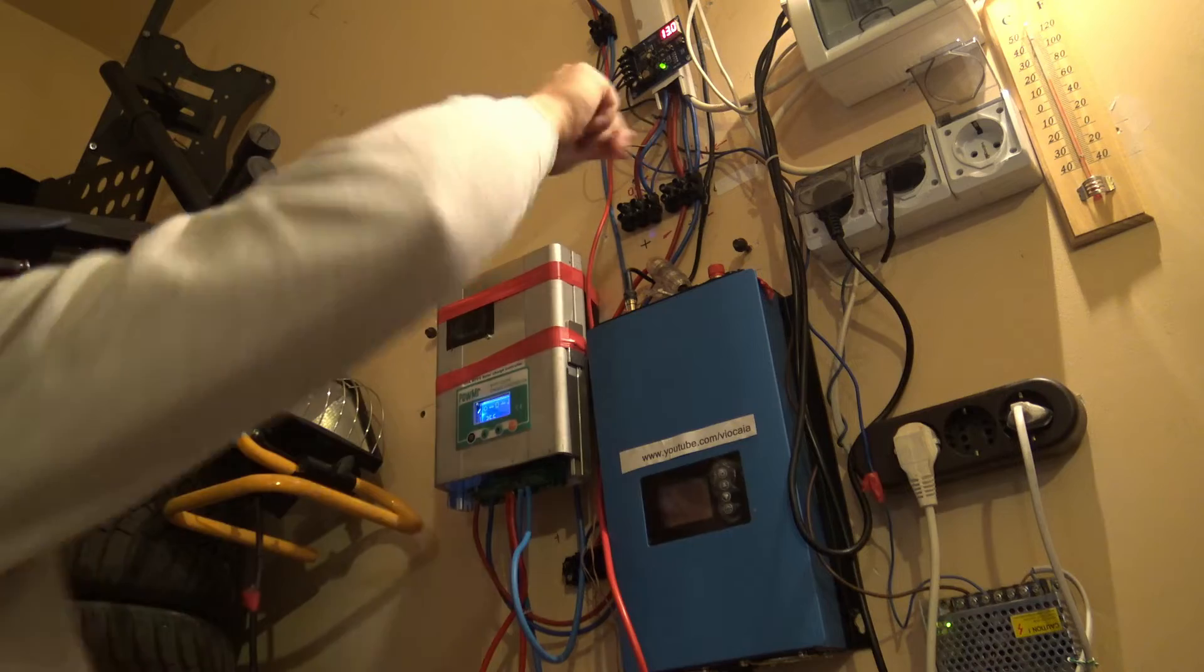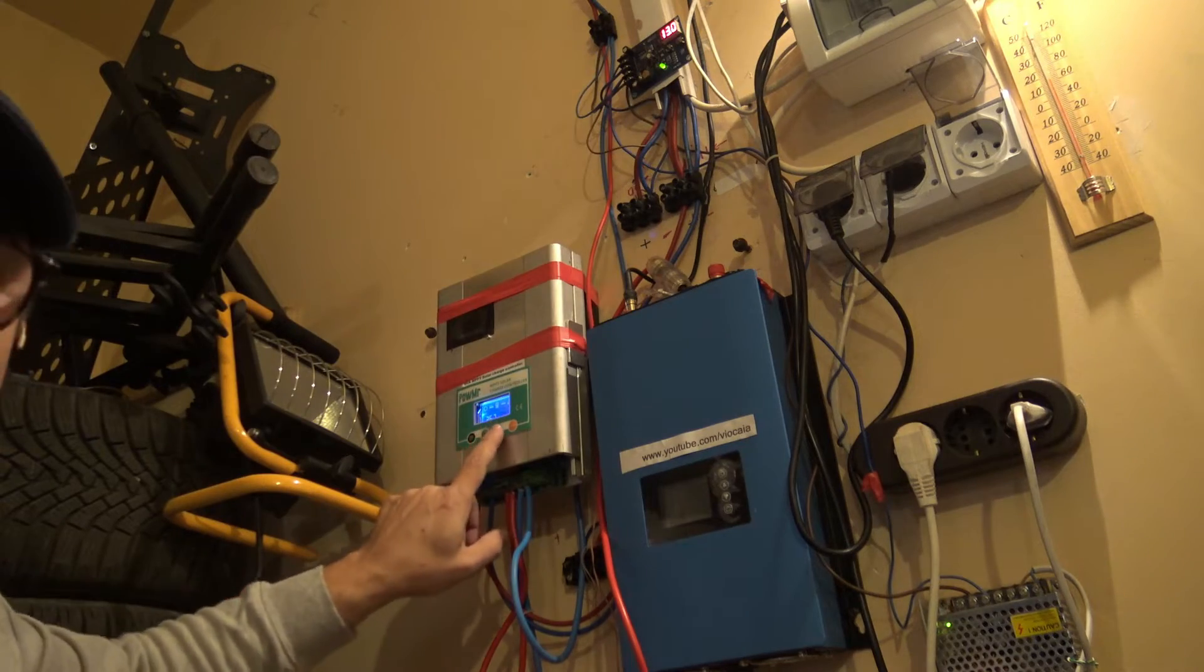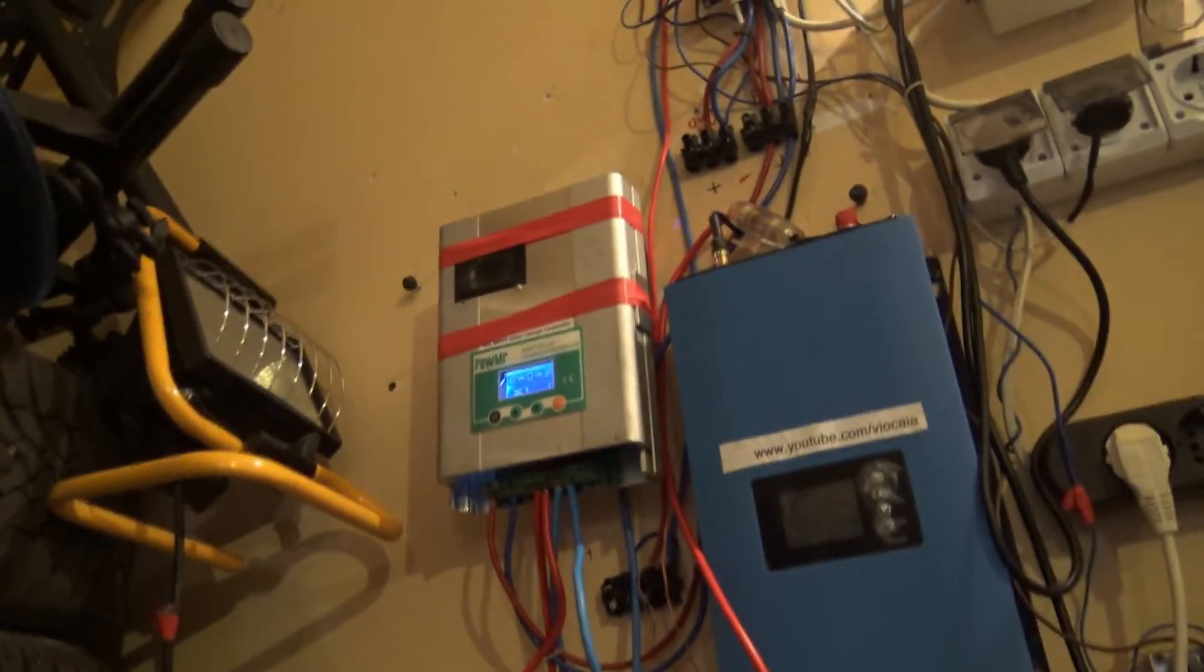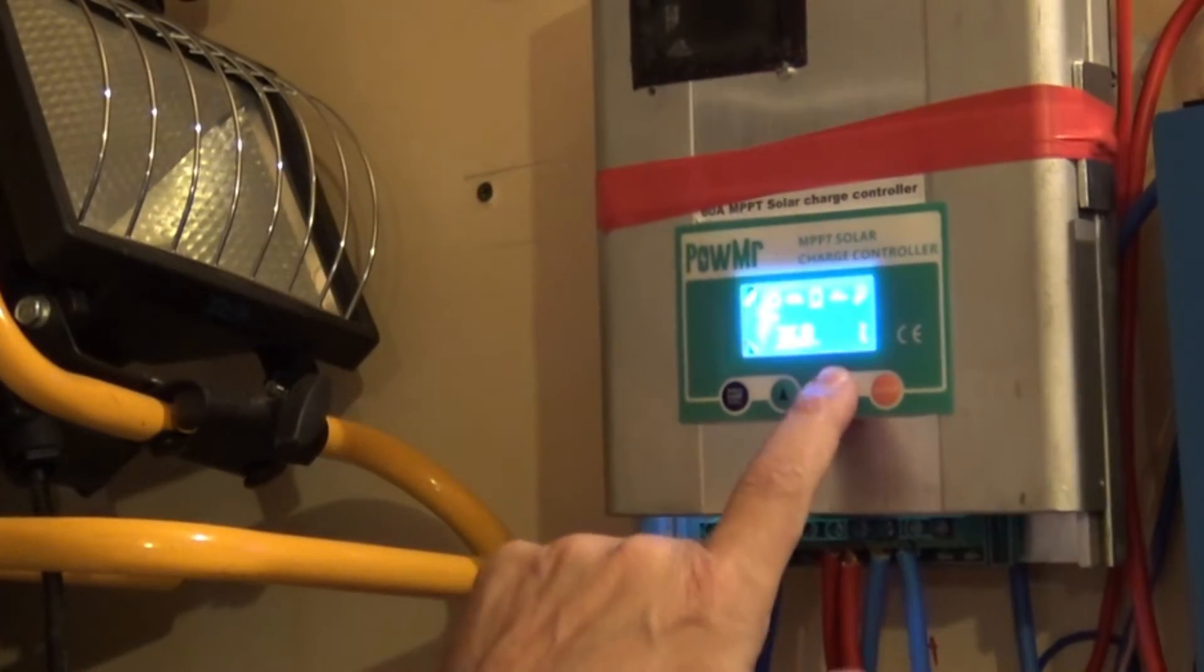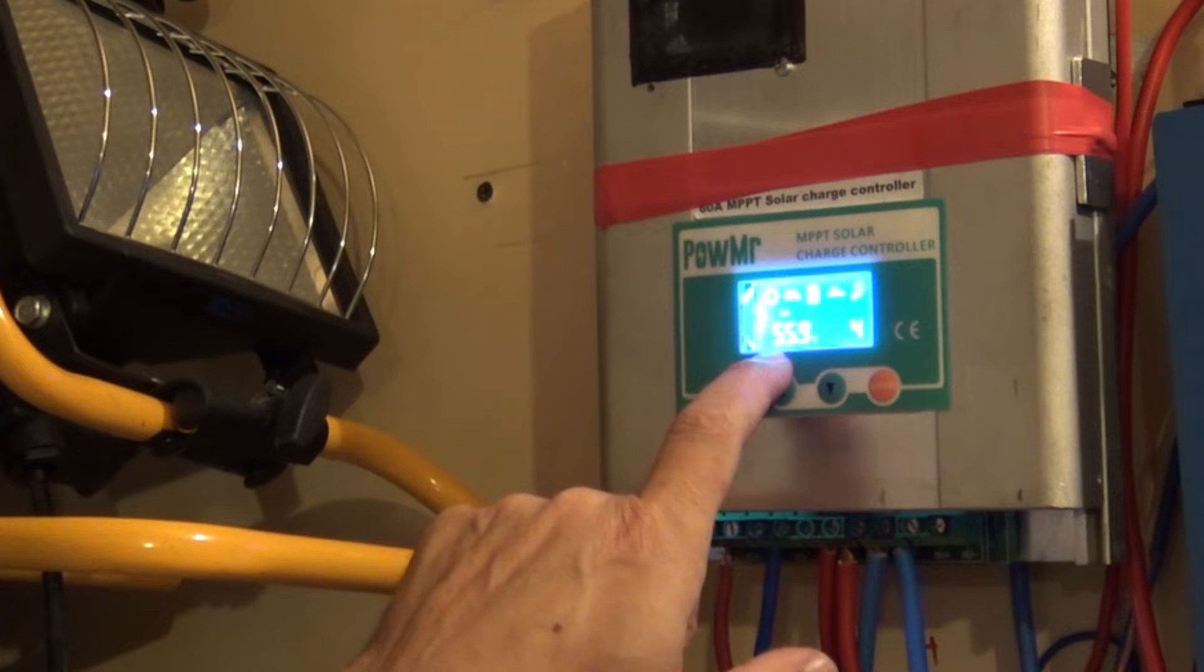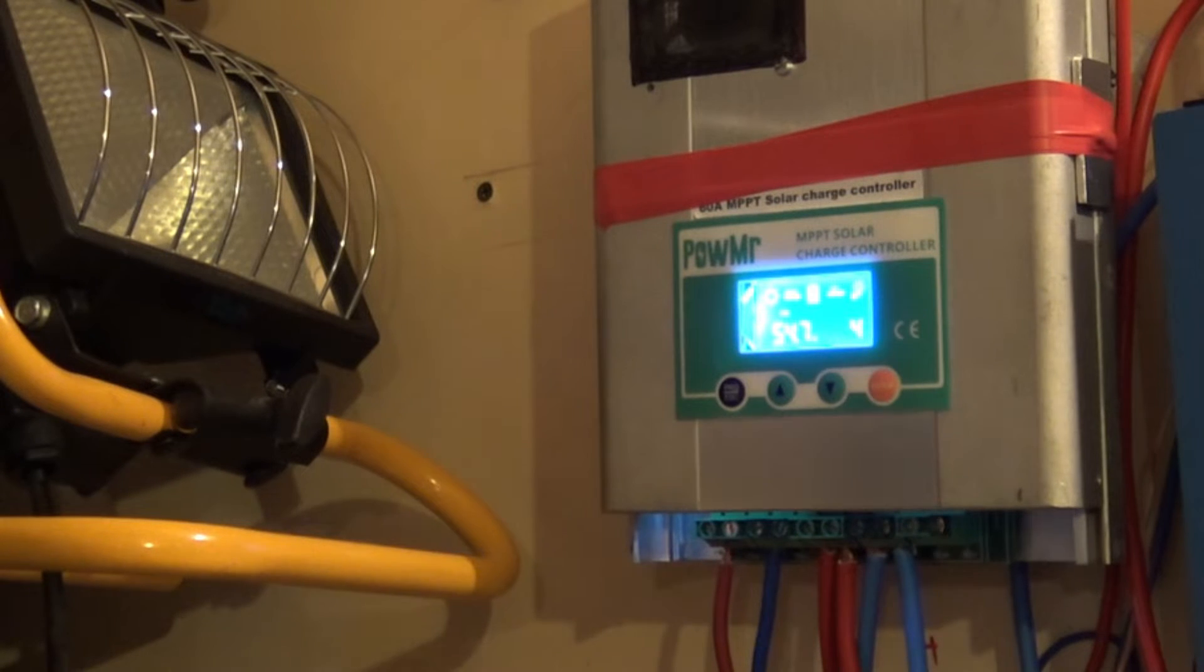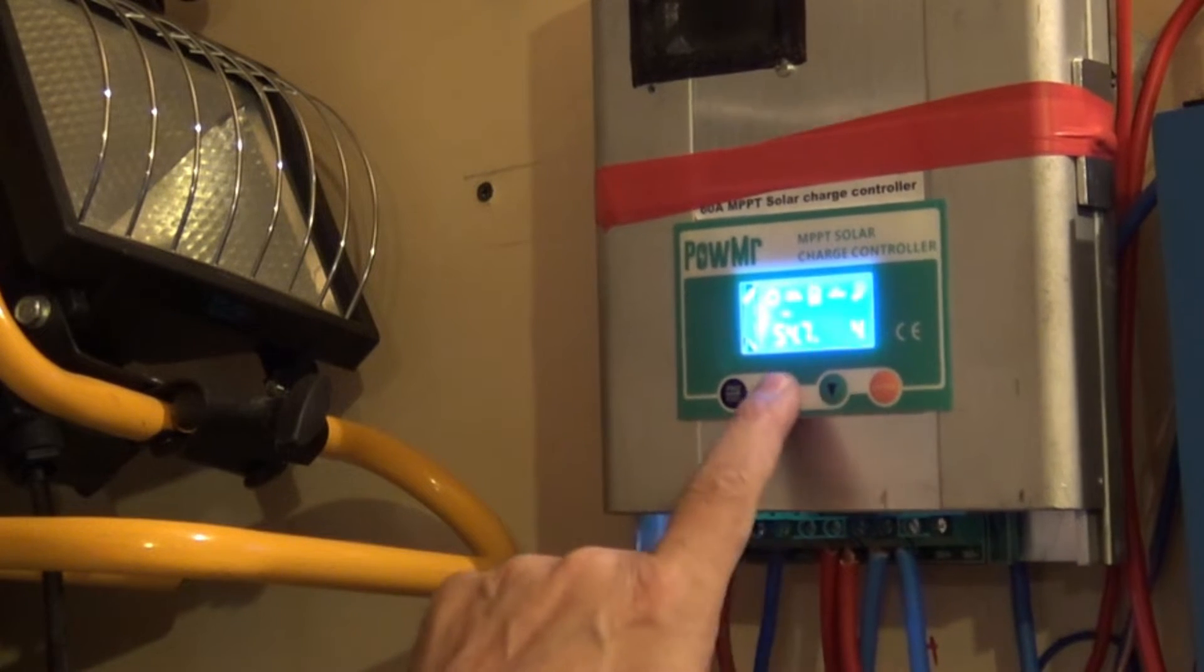Let's take a look at the MPPT here. All right, as you can see, we have 55.7 volts from the panels and 41 watts, 41 watts going to the battery, or better said 1.1 amps, almost nothing.